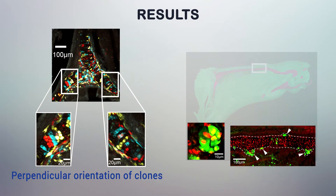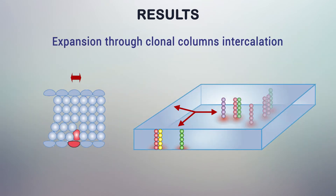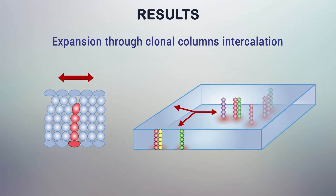We were able to alter cartilage shape by experimentally manipulating clonal geometries. For instance, sheet-like cartilages expand due to intercalations of numerous transversal clonal columns of chondrocytes.